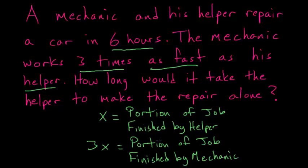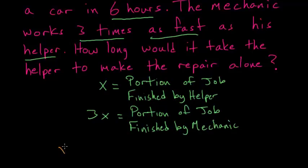The relationship we can use is that the portion of the job finished by the helper plus the portion finished by the mechanic equals one total job. In other words, x plus 3x equals one total job.